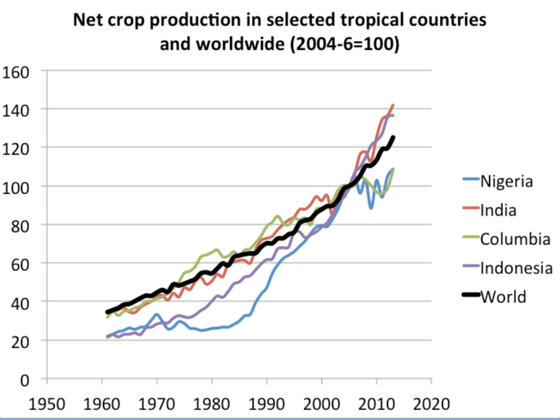Climate change and agriculture are interrelated processes, both of which take place on a global scale. Climate change affects agriculture in a number of ways, including through changes in average temperatures, rainfall, and climate extremes such as heat waves, changes in pests and diseases, changes in atmospheric carbon dioxide and ground-level ozone concentrations, changes in the nutritional quality of some foods, and changes in sea level. Climate change is already affecting agriculture, with effects unevenly distributed across the world.